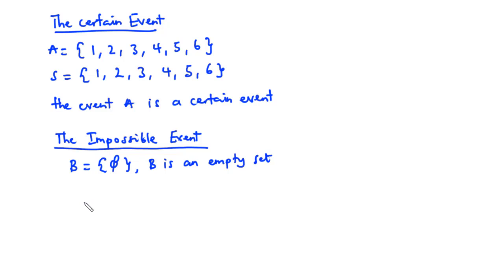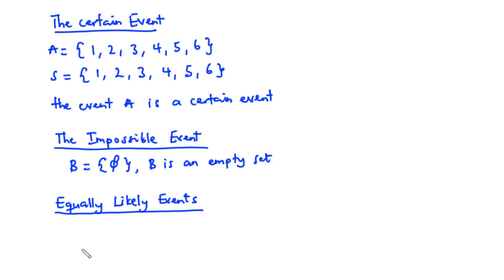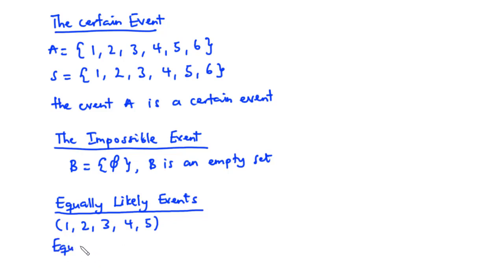Now let's move on to equally likely events. Suppose that 5 identical balls numbered 1, 2, 3, 4, and 5 are placed in a box. If a ball is selected at random from the box, then all 5 numbers have the same chance of being selected. Hence they are said to be equally likely. Equally likely events are events with an equal chance of occurring.